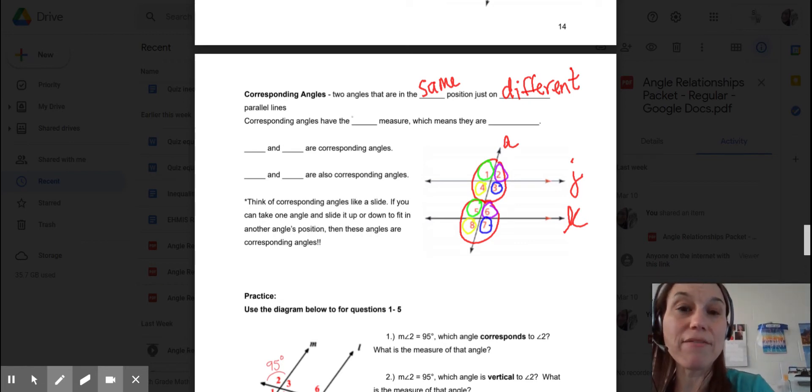So corresponding angles have the same measure. They're the same size, which means they are equal.